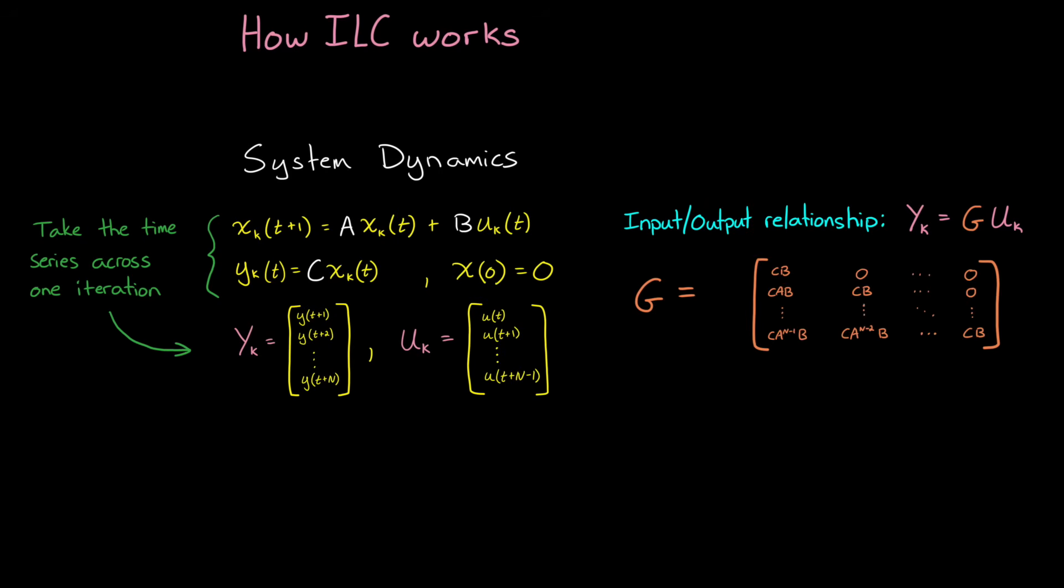Now, it's worth noting that the system could be single input-single output or multi-input-multi-output. And G is going to be sized accordingly based on the A, B, and C matrices. For example, for a single input-single output system with n control actions per iteration, G becomes an n-by-n matrix.